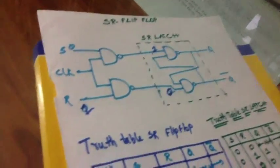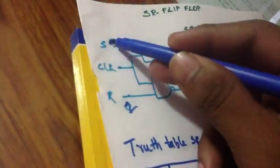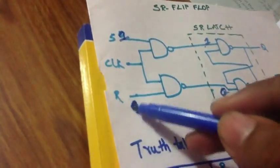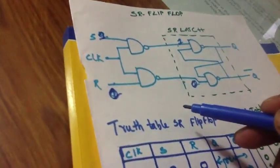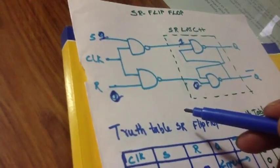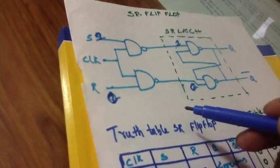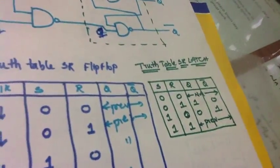Now similarly for 1 and 0. When S is equal to 1, R is equal to 0, the input for the SR latch will be 0 and 1. 0 and 1 input for the SR latch will be 1 and 0 respectively, that is what we got.